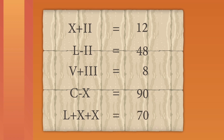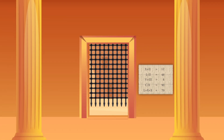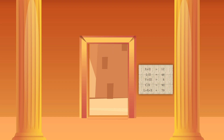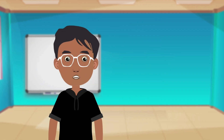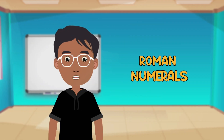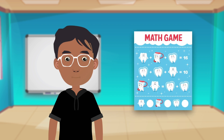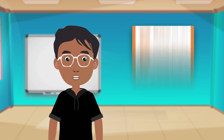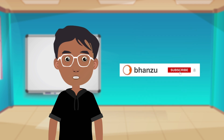As soon as the kids solve the puzzle, the door opens and they get out. Hi friends, you saw how we got out using Roman numerals. Try it yourself by downloading the worksheet from the description below. And subscribe to our channel for more such adventures.